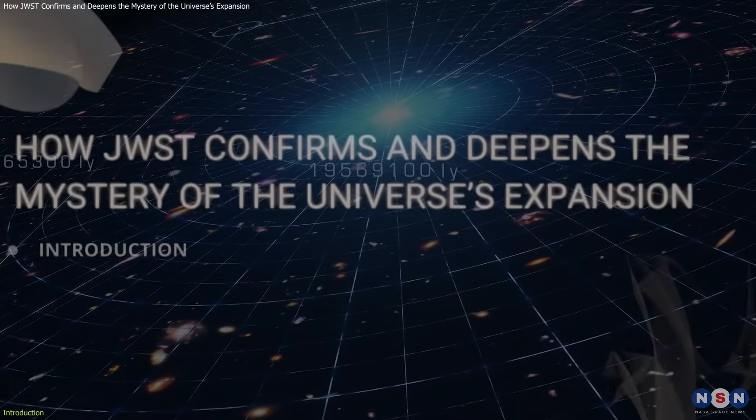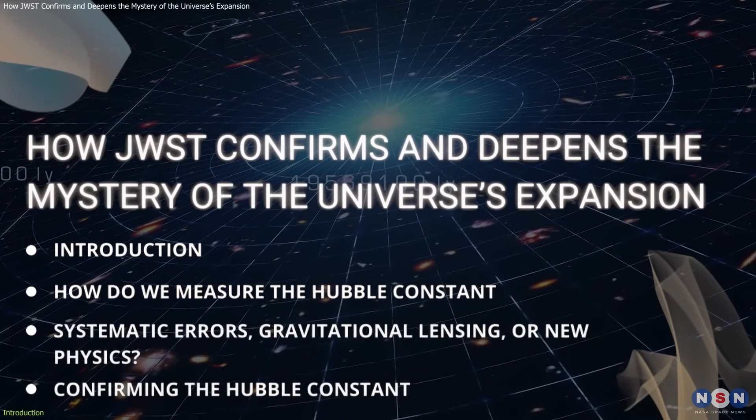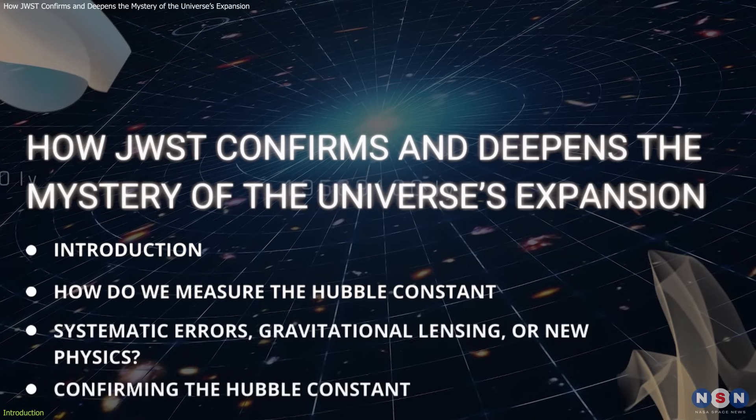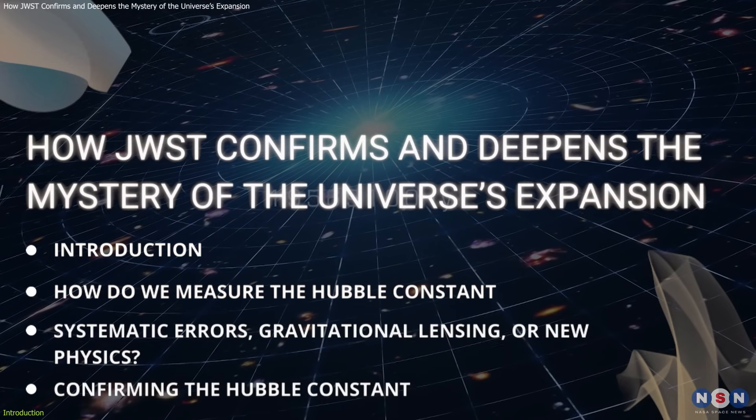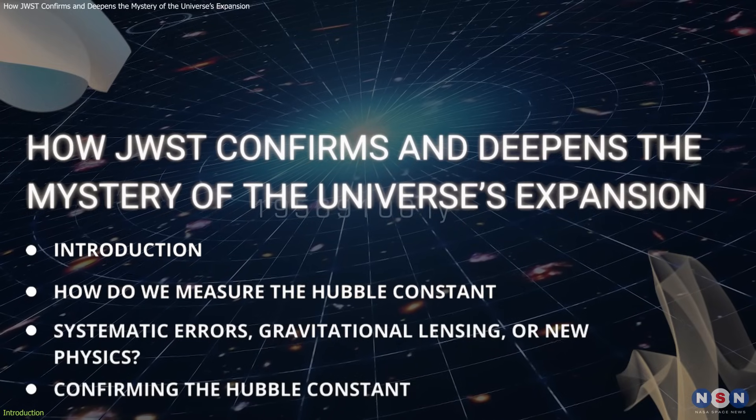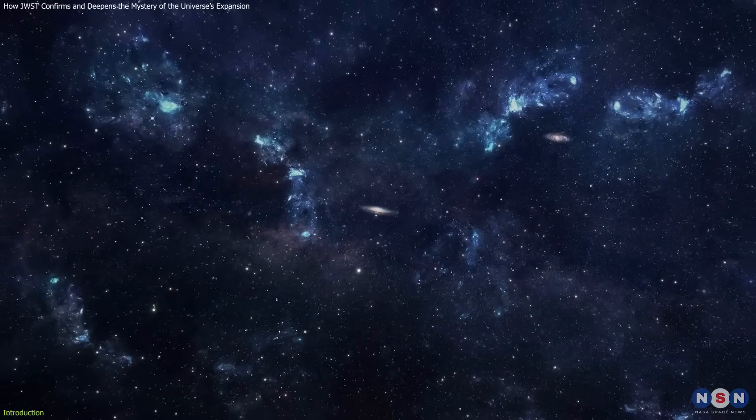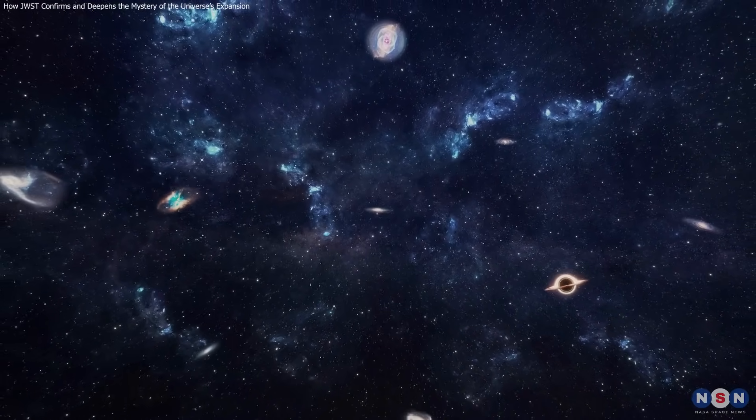In this episode, we will talk about the latest results from NASA's James Webb Space Telescope, which confirm the accuracy of the Hubble constant measured from certain types of stars and supernovae, but also deepen the mystery of why it differs from the value predicted from the Big Bang afterglow. We will also discuss what this means for our understanding of the universe and its underlying physics.